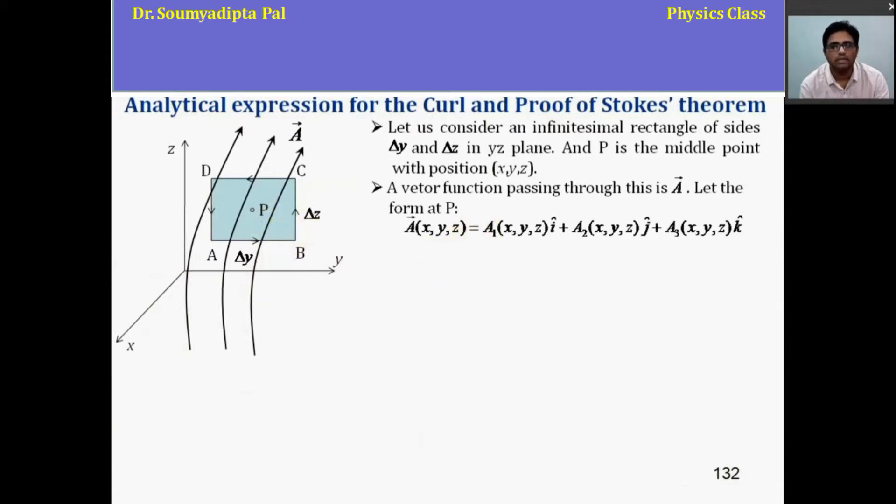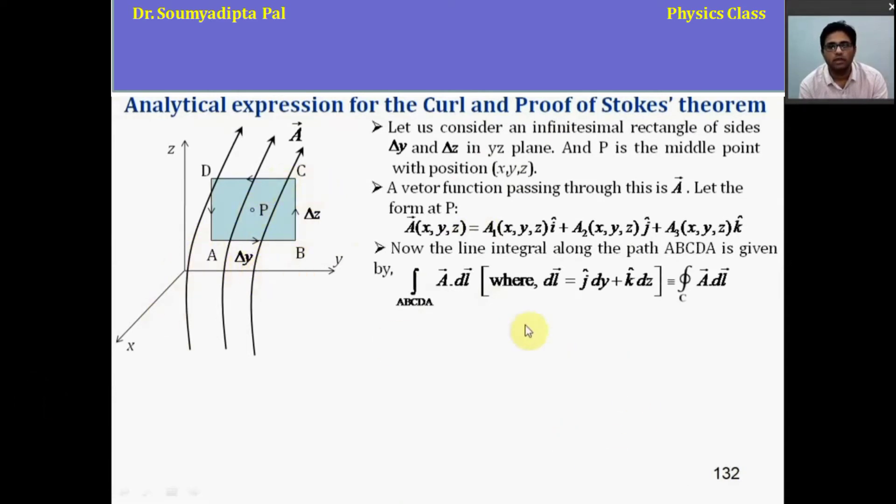Now suppose a vector field A is passing through this rectangle and the form at P is like this. Then the line integral of the vector field along the path A, B, C, D, A is given by like this. As the starting point and end point are same, this is also called closed line integral of the vector field.